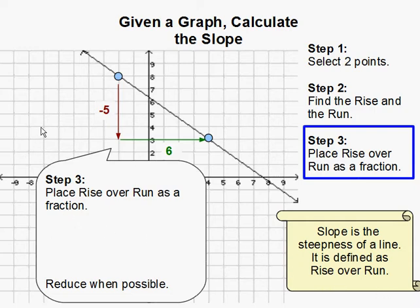So, I'm going to place the number for the rise which is negative 5, and the number for the run which is 6.